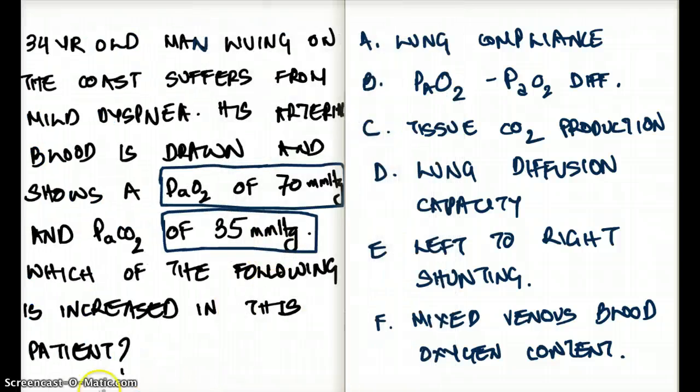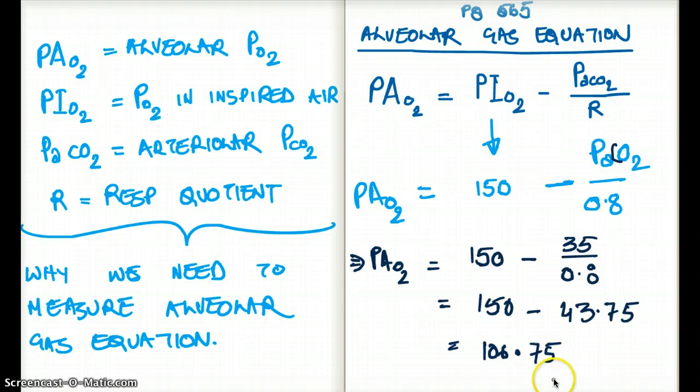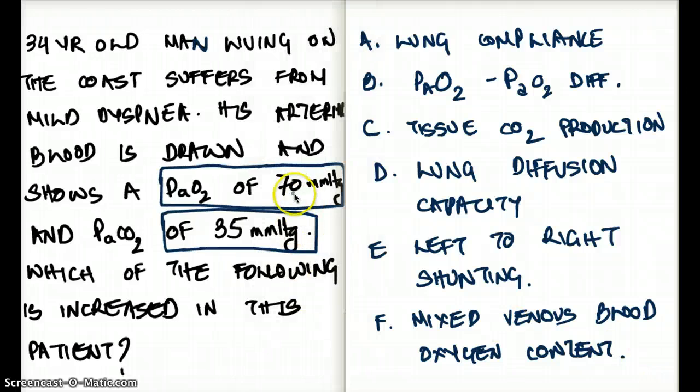So I'm going to put 35 here, divided by 0.8. And when we calculate that we get 150 minus 43.75, which finally gives us 106.75. So now we know that the alveolar oxygen is going to be 106.75, and the arterial oxygen is 70. So the difference is about 36 millimeter mercury.